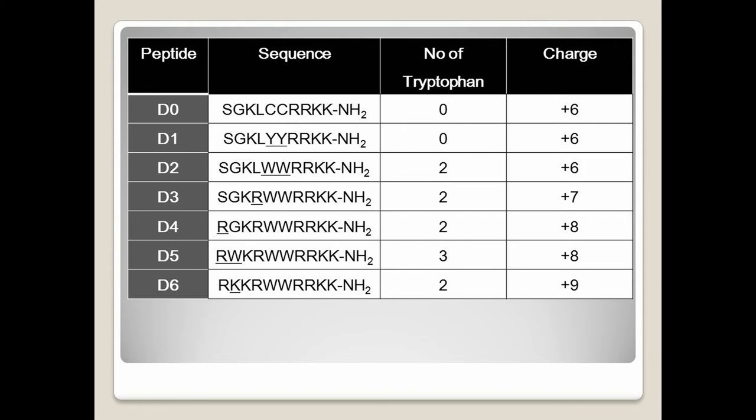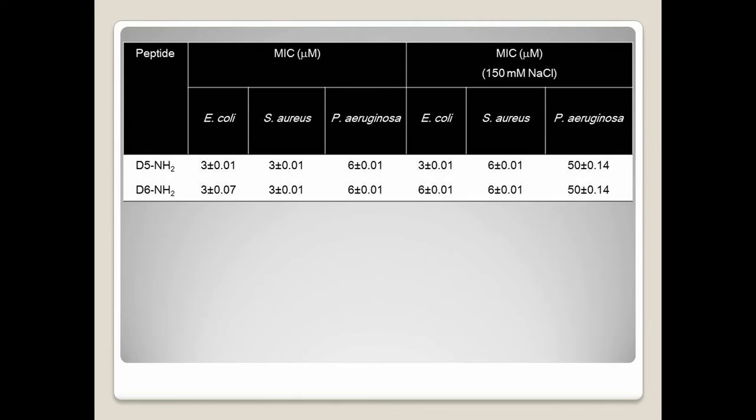Out of the six variants generated, two, D5 and D6, showed superior antimicrobial activity with minimum inhibitory concentrations at sub-micromolar concentration towards E. coli, staphylococcus aureus, and Pseudomonas aeruginosa.